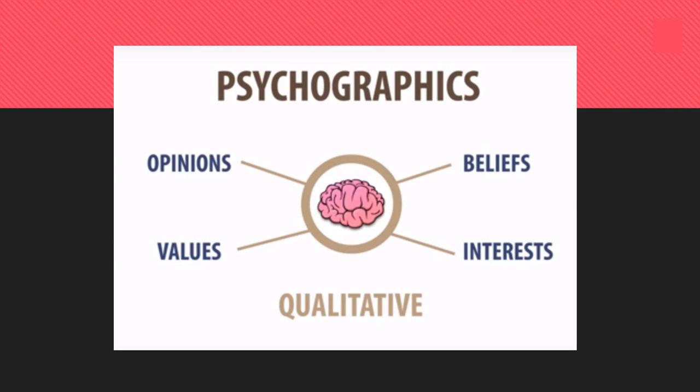To summarise, psychographics covers people's opinions, beliefs, values and interests, and you get that from qualitative research. You can't really categorise people using multiple choice questions — you need to ask people what their beliefs are, what their opinions are, what their values are, and what they're interested in and why.